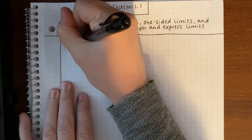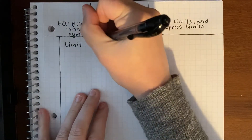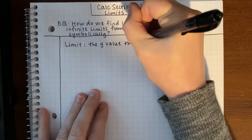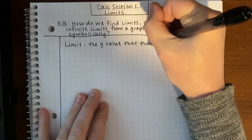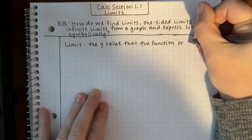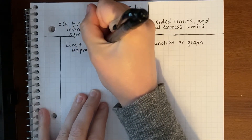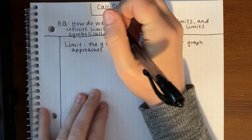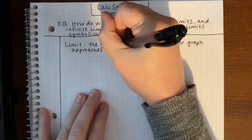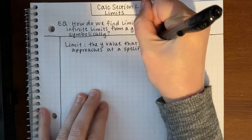So the first thing is our definition of a limit. A limit is the y-value that the function or graph approaches at a specific x-value.